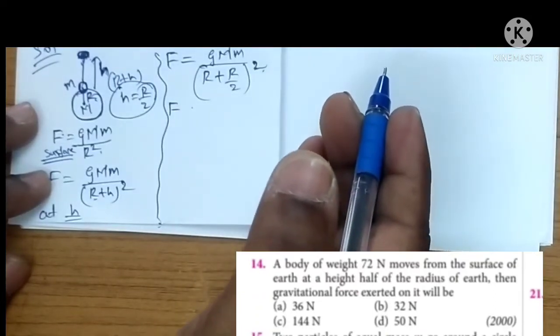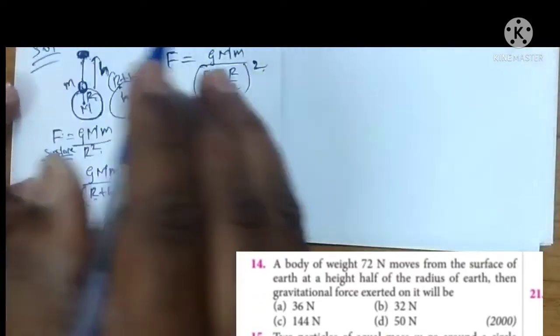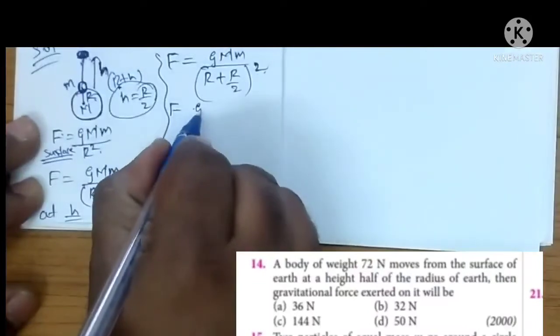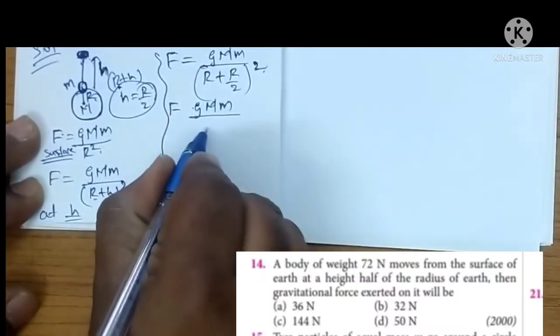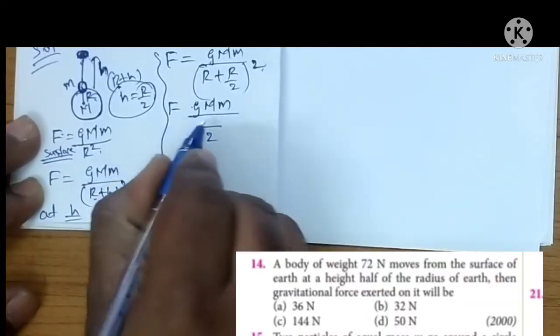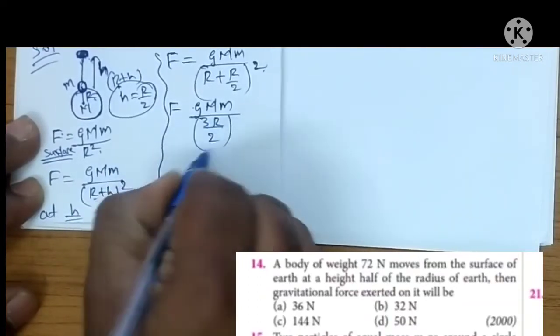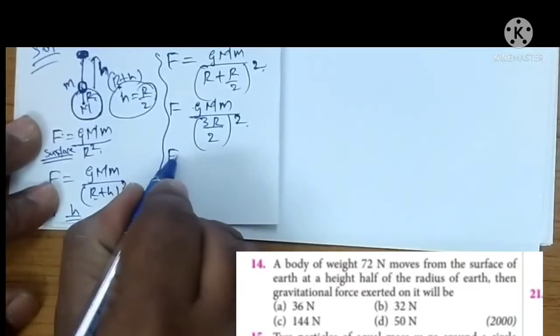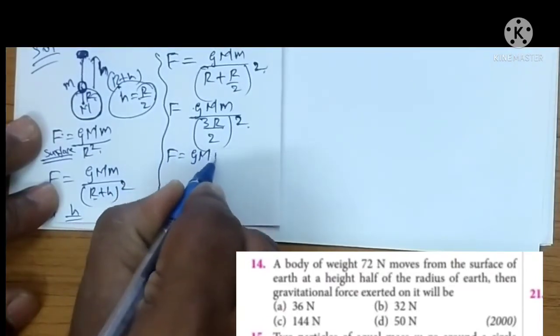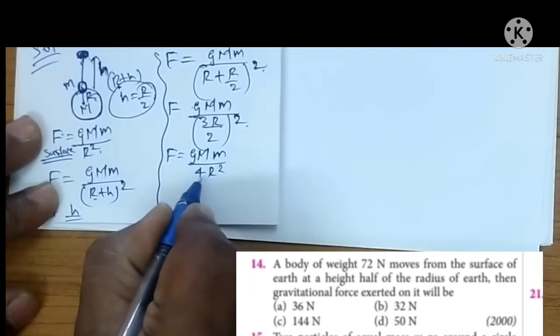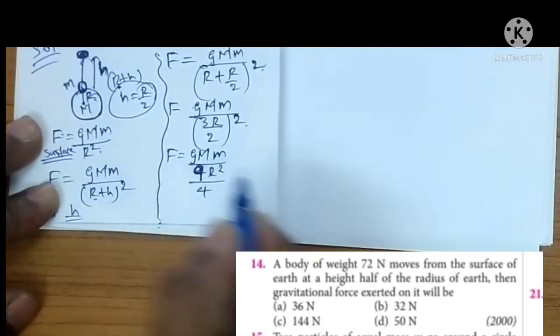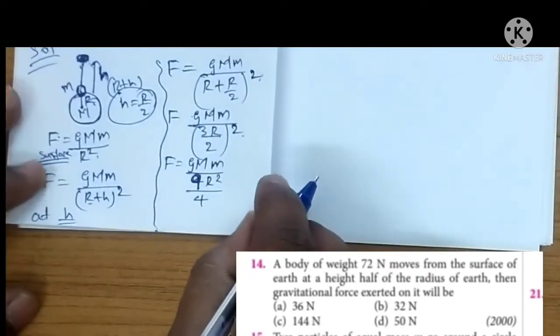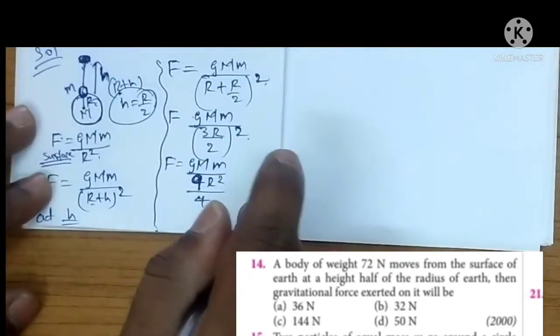मैं इधर क्या करता हूँ? I am going to solve it. G M m upon, LCM lelo, 2 होता है. And it will become 3r होता है. So F is equal to G M m upon, 4r square upon, sorry, 9r square upon 4. Then solve it.